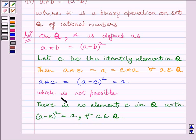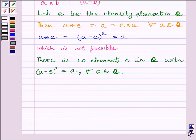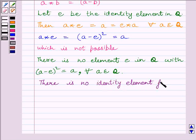So our final answer is there is no identity element for binary operation star.